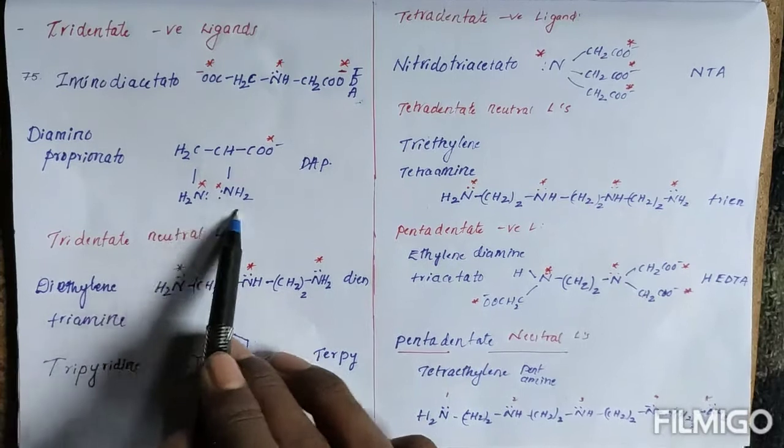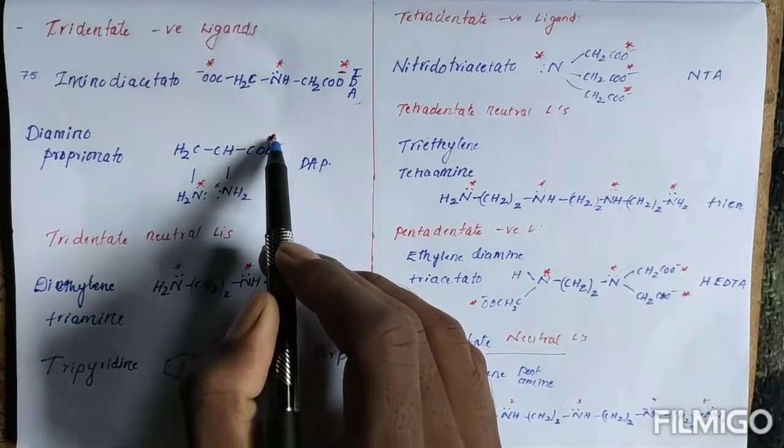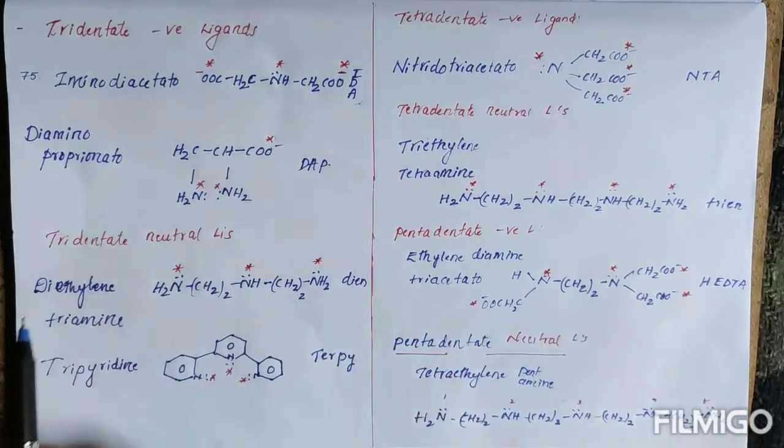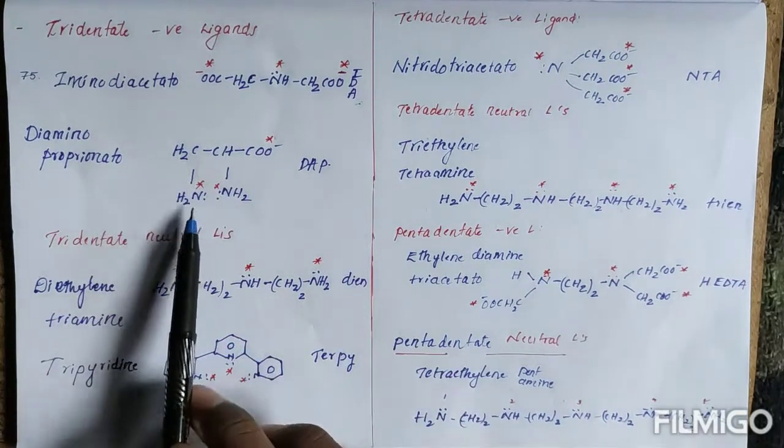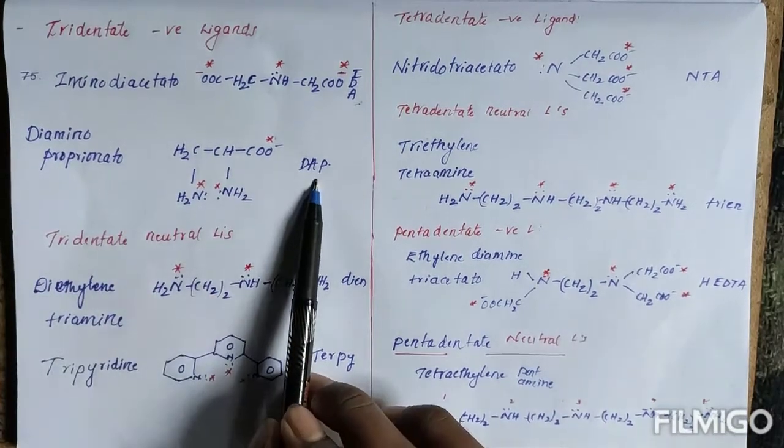This is diamino. I have been representing the donor atoms with asterisk, so diaminopropionate. It is represented with DAP.